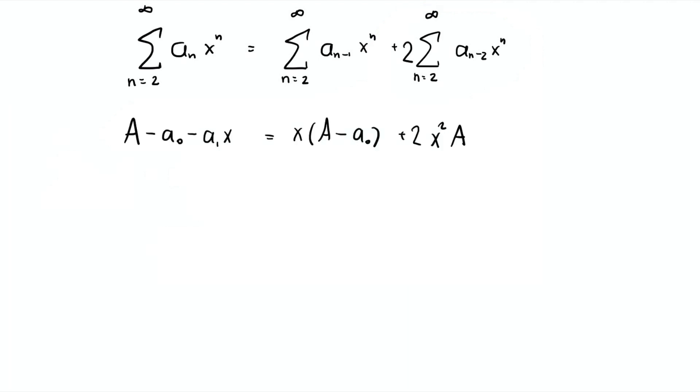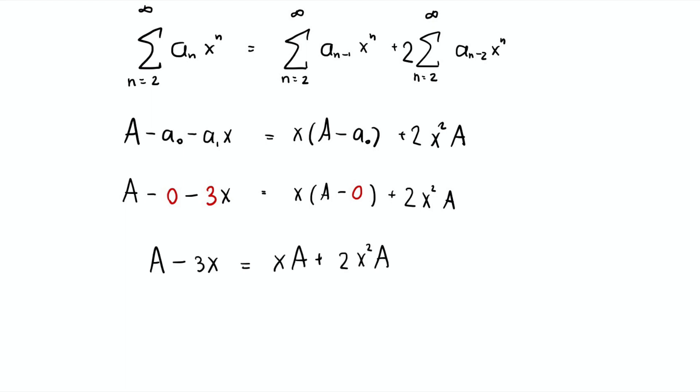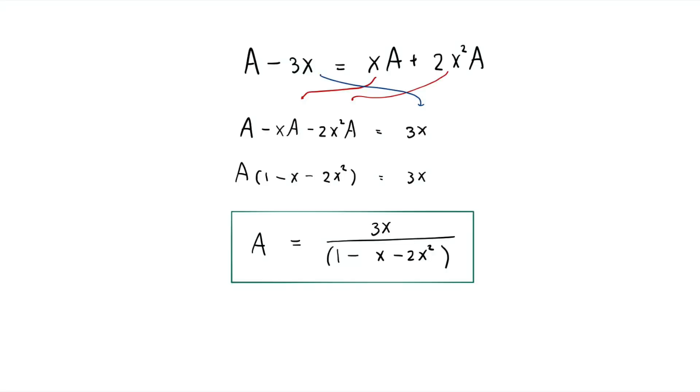With that, you can plug in a₀ equal to 0 and a₁ equal to 3. The equation becomes A minus 3x equal to xA plus 2x²A. Then we isolate A to solve for A in terms of x. After a bit of algebra, we have A equal to 3x over (1 minus x minus 2x²). This is great because we have a formula for the generating function of the sequence already. If you want to know a particular value of aₙ, we can plug this formula into some sort of calculator or computer to generate out the sequence. However, we can actually do a lot better — we can get the closed form of the sequence.